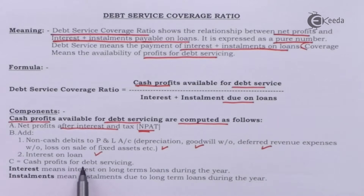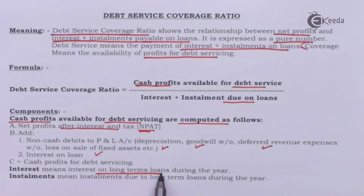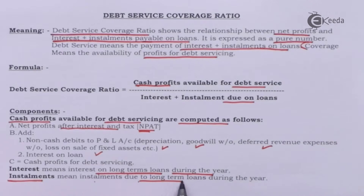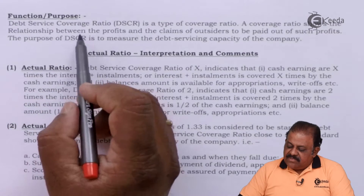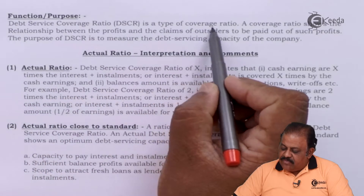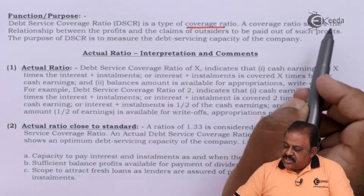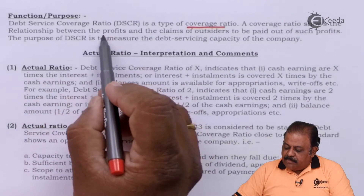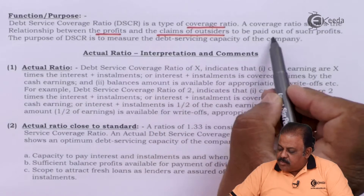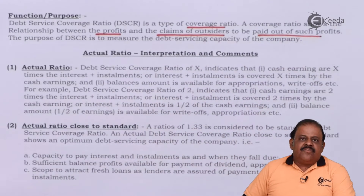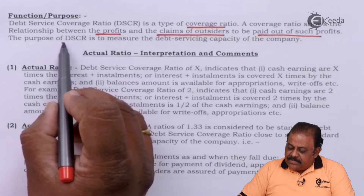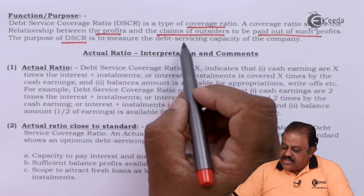Cash profit for debt servicing includes: interest on long-term loans during the year and installment due on long-term loans during the year, where installment stands for part of the principal amount. The debt service coverage ratio is a type of coverage ratio — a coverage ratio shows the relationship between profits and the claims of outsiders to be paid out of such profits.